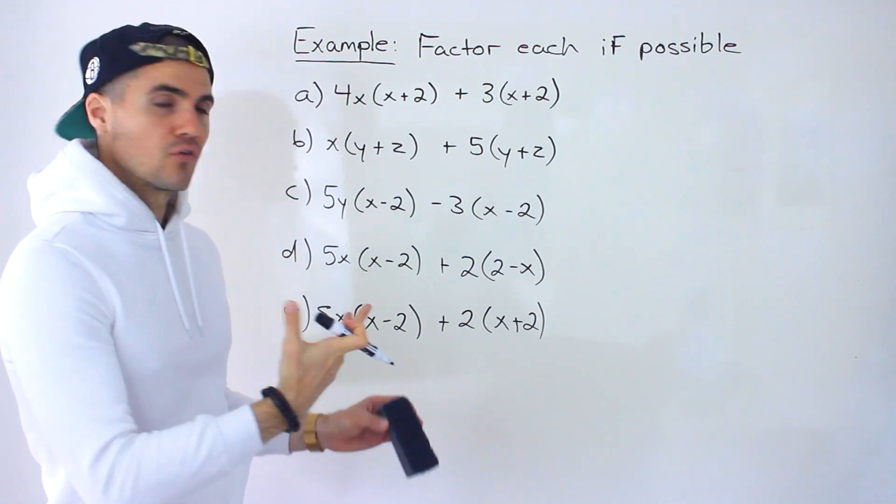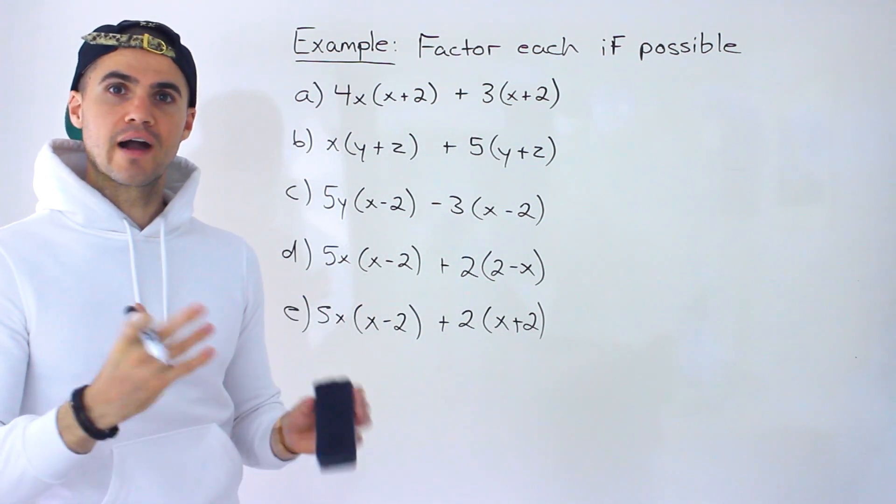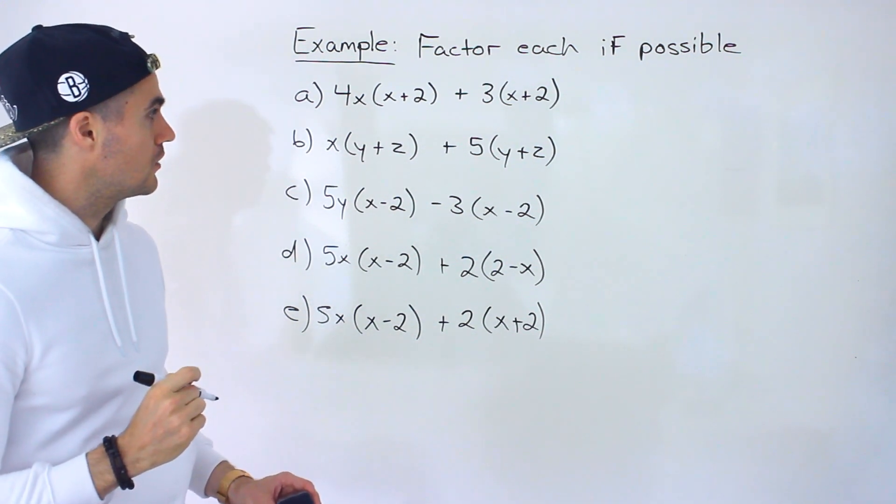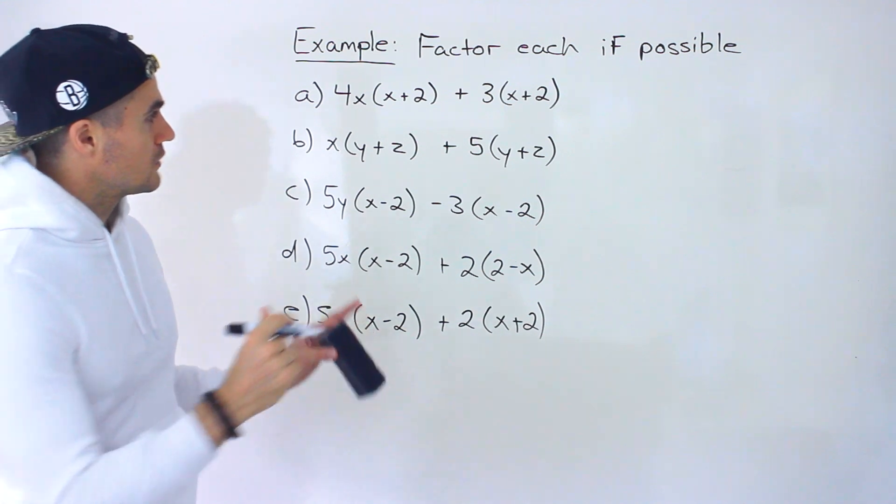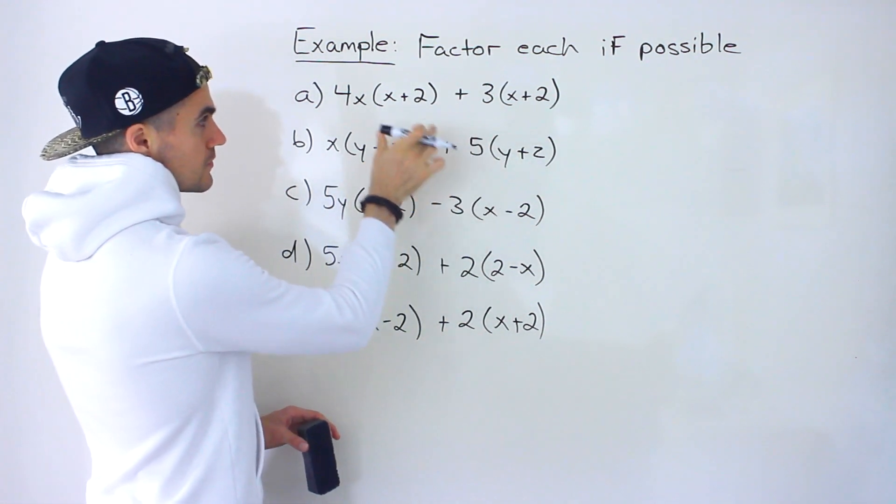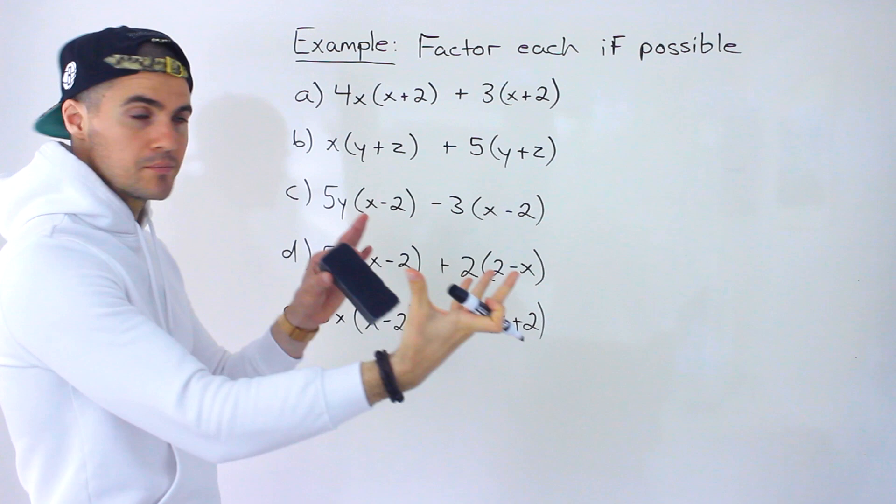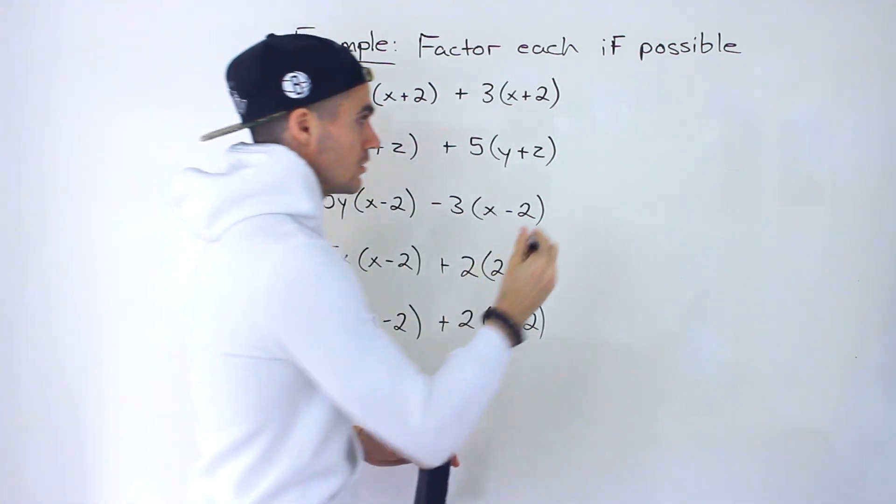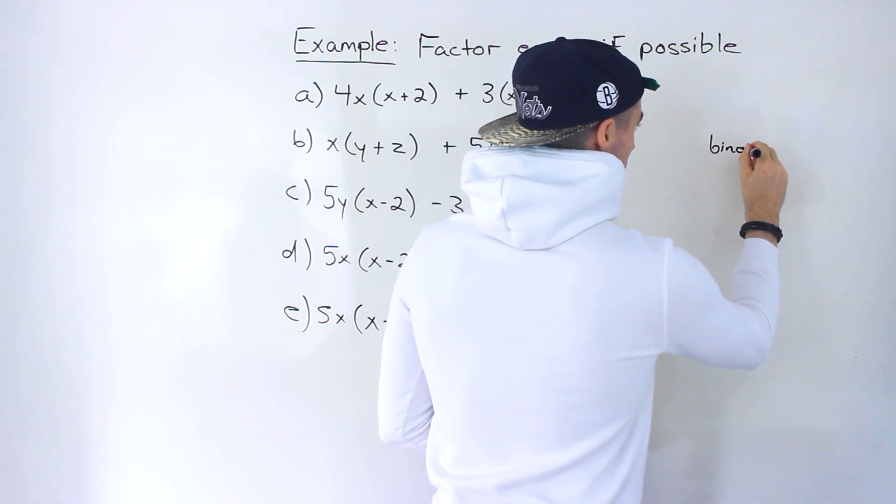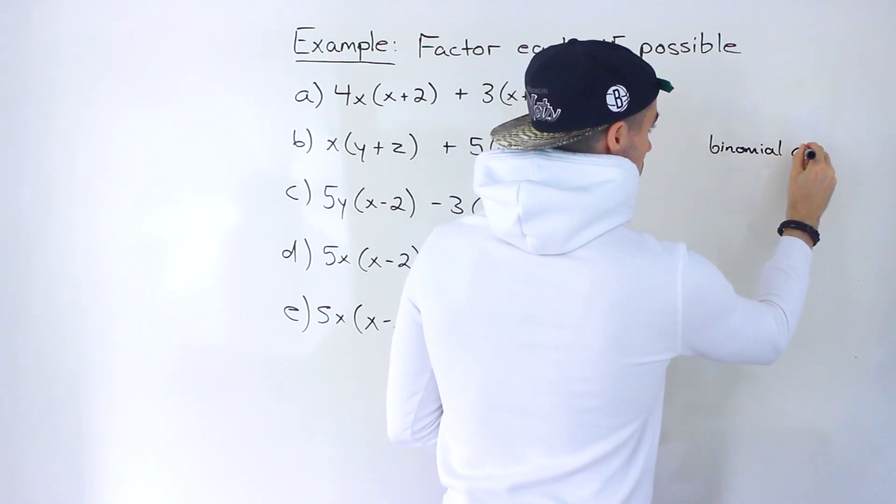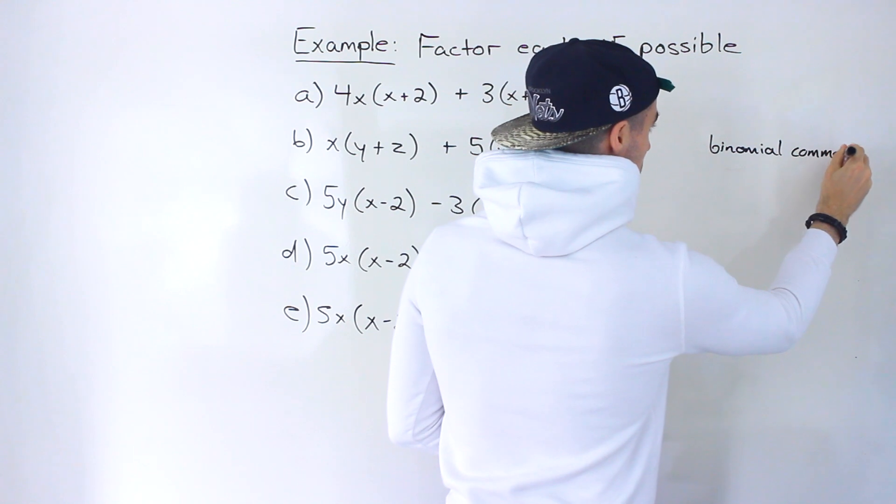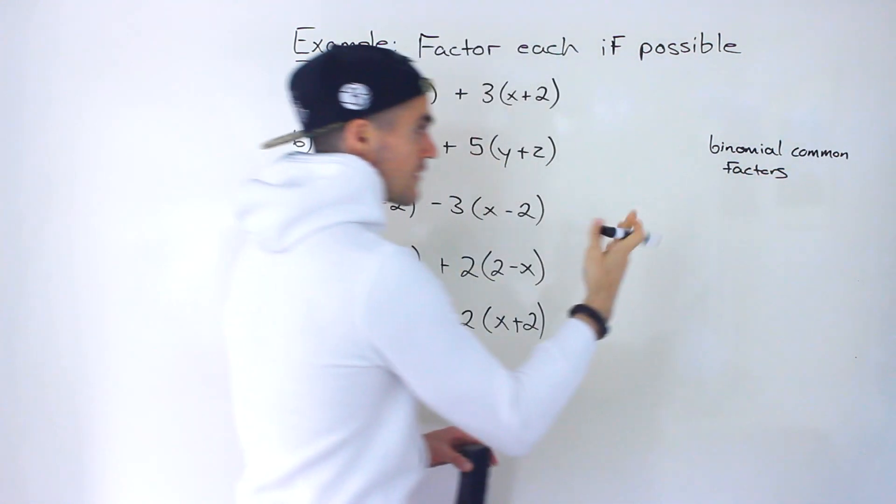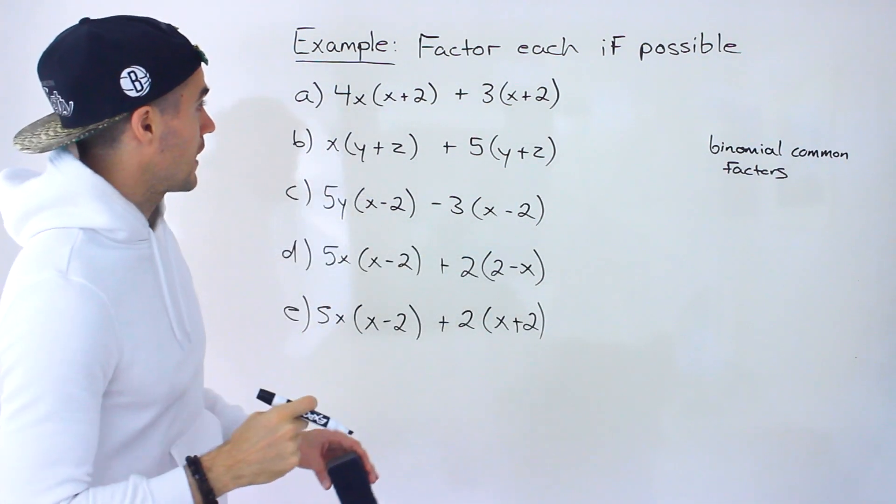This is actually a prerequisite for a certain technique called factoring by grouping, which we'll go over in another video. But here what we're going to be doing, if you notice that the brackets are the same, and the brackets are binomial, so we're going to be taking out those factors. They're called binomial common factors. You may see that kind of terminology come up. Maybe the question will say factor by factoring out binomial common factors.